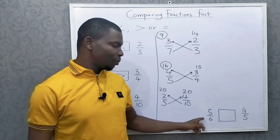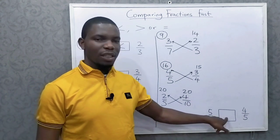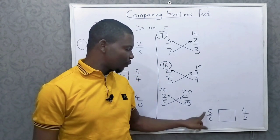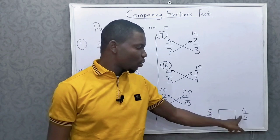Now you're going to do this last one for me. Tell me what sign you're going to put here. 5 over 6 and 4 over 5.